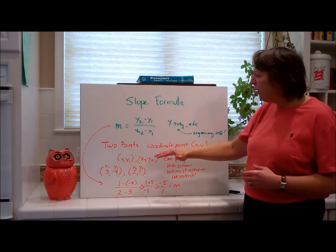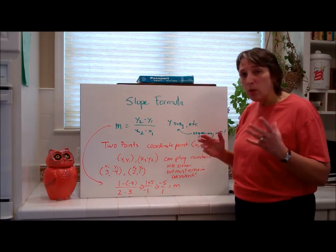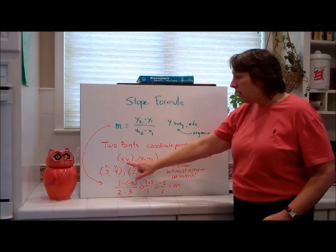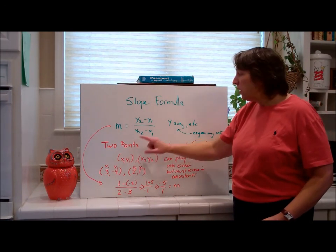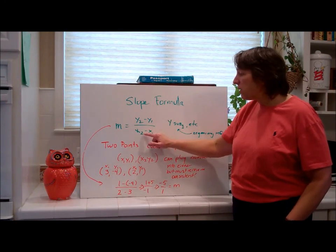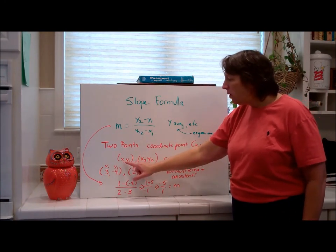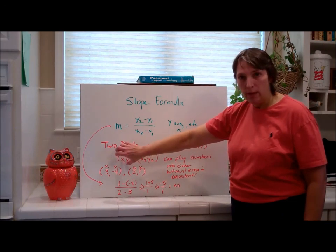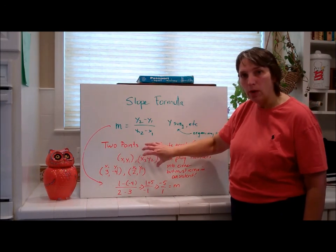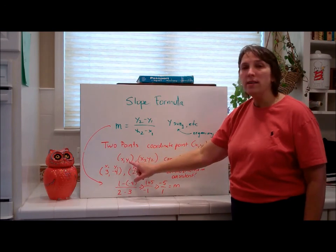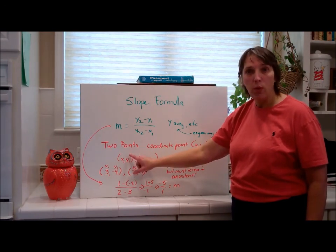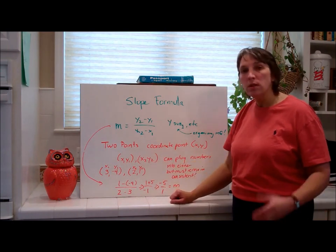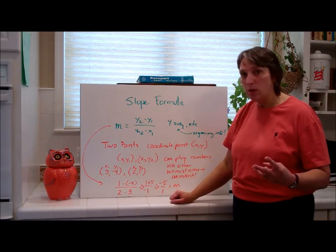It equals y sub 2 minus y sub 1 over x sub 2 minus x sub 1. It's important to note that the sub 1 and the sub 2 is just a way to organize your data. And we have to have two points in order to use the slope formula. When we do that, we take the two points, and remember they're coordinate points, and they're listed as x, y. Well, some students get confused because when they see this x sub 1 and x sub 2, see how I took the two coordinate points and I labeled this the one point and this the two point. So x sub 1, y sub 1 is the first point, the sub 1s, and x sub 2, y sub 2 is the second point that I've chosen to identify.